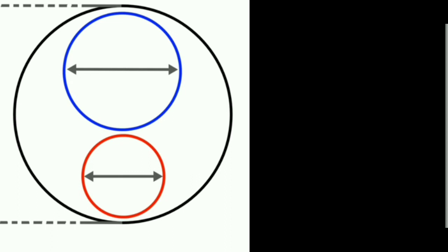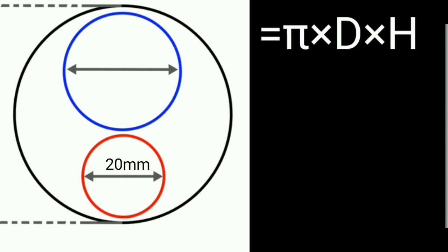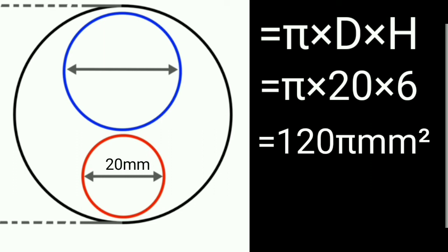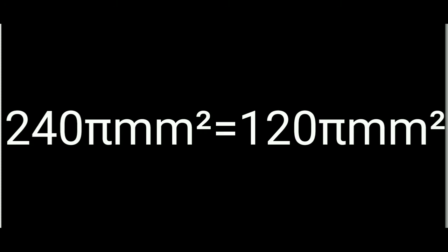For the two valve cylinder system there is only one outlet valve, so the formula reduces to π × d × h: π × 20 mm × 6 mm = 120π mm². The exhaust efficiency is almost double in the four valve system compared to the two valve system, because the four valve system has two dedicated outlet valves whereas the two valve system has only one.